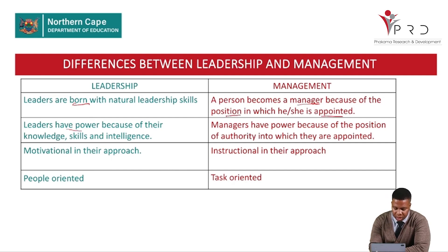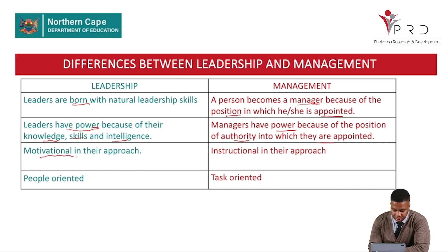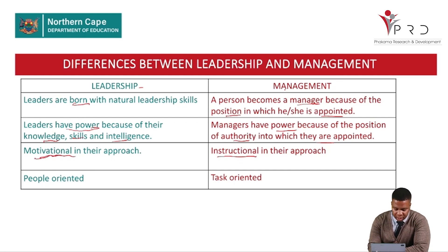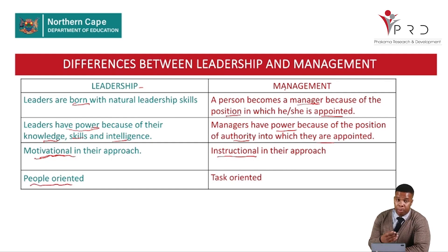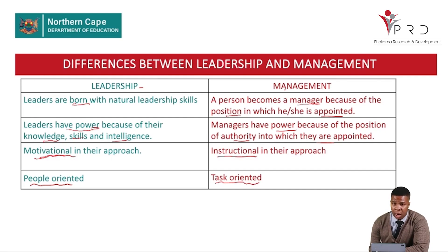To summarize the differences: the power of the leader is their knowledge, skills, and intelligence, but the power of the manager is the authority of their appointed position. Leaders are motivational — they motivate followers to do what needs to be done. Managers give instructions to employees. Leaders are people-orientated, caring about people's feelings, while managers are task-orientated, focused on completing the task regardless of how employees are feeling.